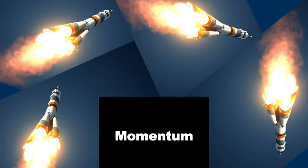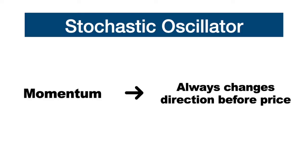If you see a rocket going up into the sky, it will have to slow down before it starts its downside momentum, and the same applies for the price. Momentum always changes direction before price.